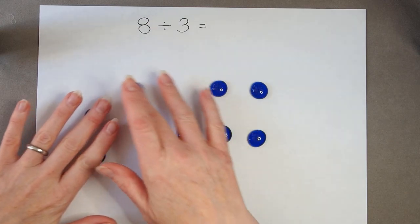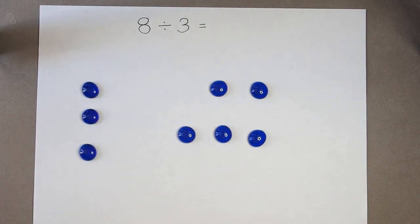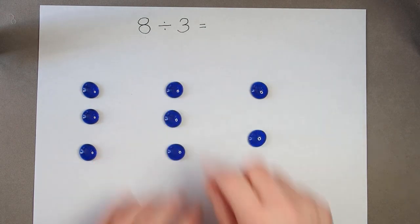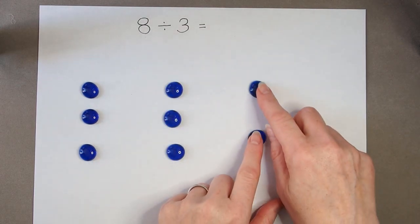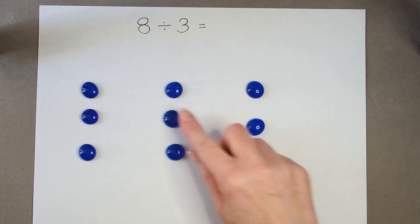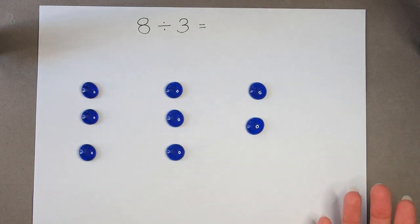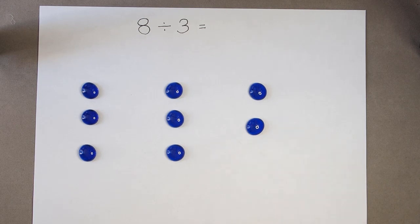Either way is the same answer. So there's one 3, there's two 3's, and then I've got some extra ones that are just left over. There's not enough to make another group of 3.